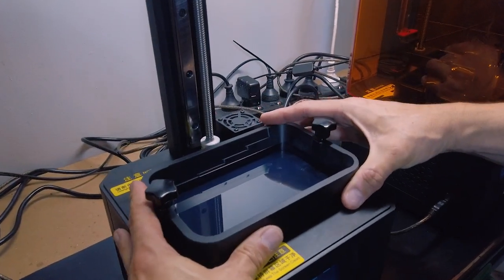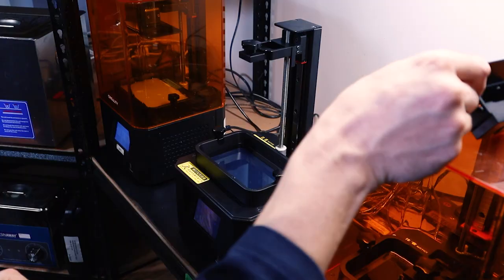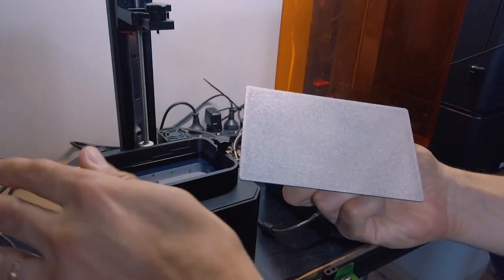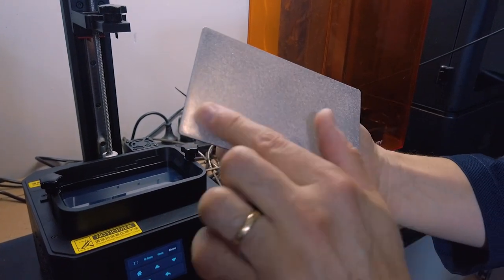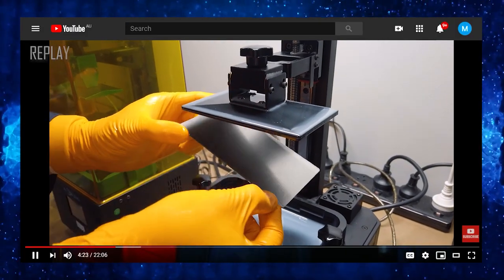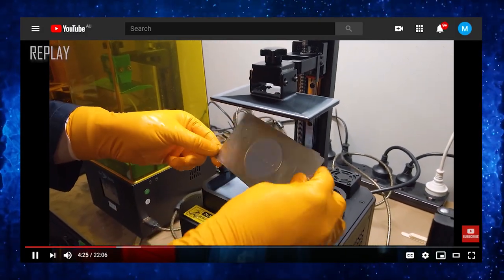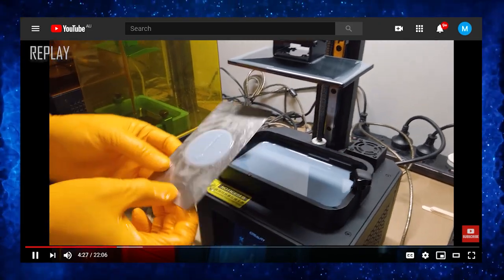So let's put that back into the printer, tighten down the screws, grab the new build plate and you'll see that this is a nice clean surface that's already been scuffed up. We do sell Wham Bam systems to support this printer. It does make removing the model a lot simpler.